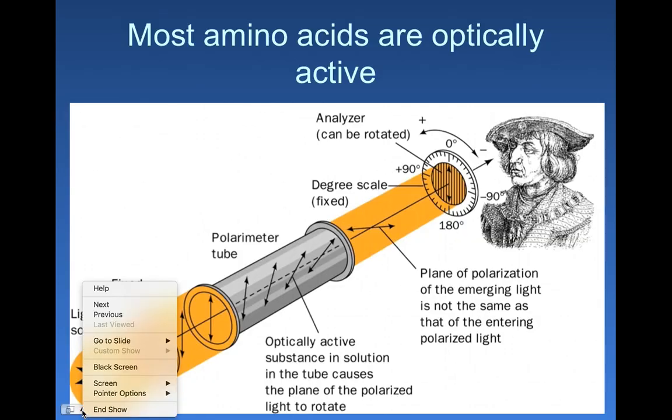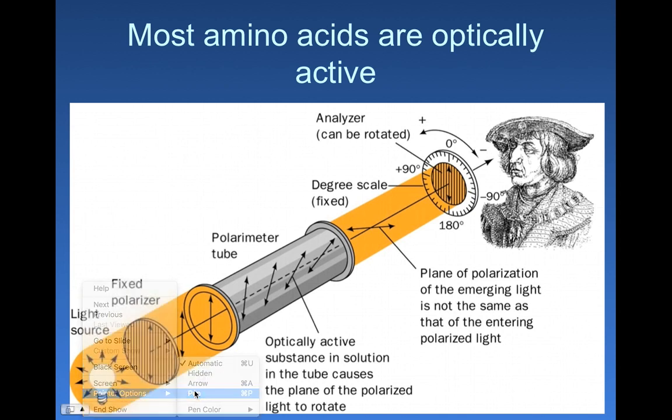Okay, now that we've learned the general structure of amino acids, we need to think about their stereochemistry. Most amino acids are optically active. Which one isn't? Well, we mentioned that earlier. It's glycine, because it does not have a chiral carbon.